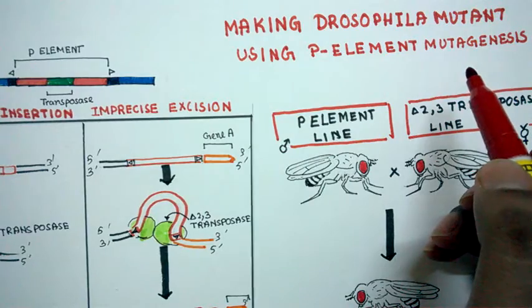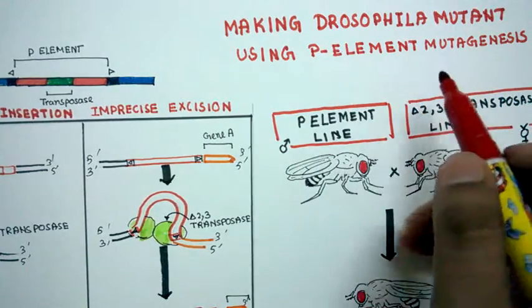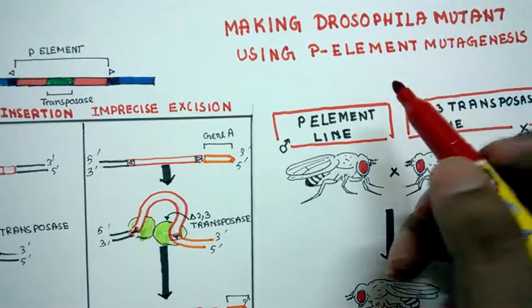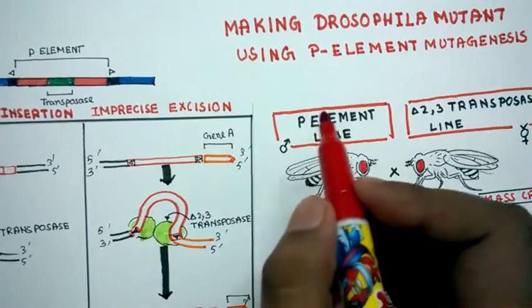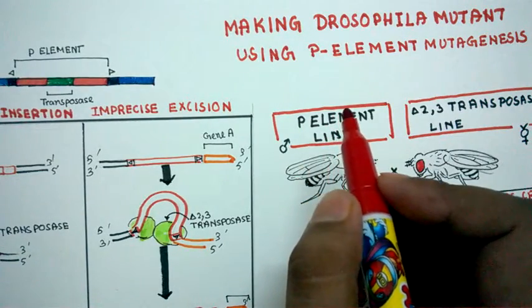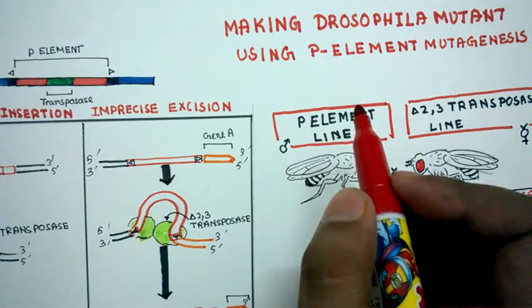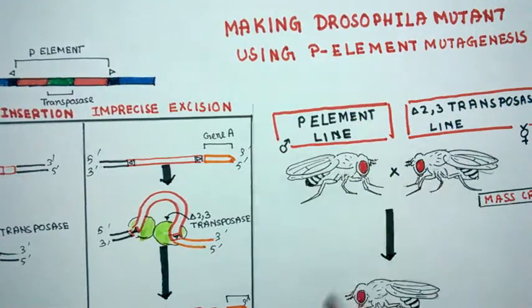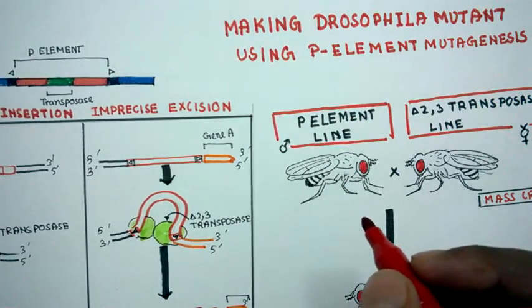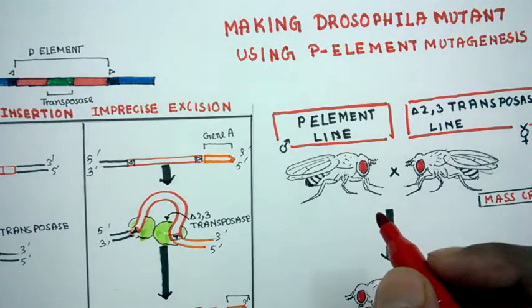Before understanding how we create the mutant, we should understand why we create the mutant. In my earlier videos I talked about how we can create a knockdown or overexpression using RNAi, but RNAi has a problem.